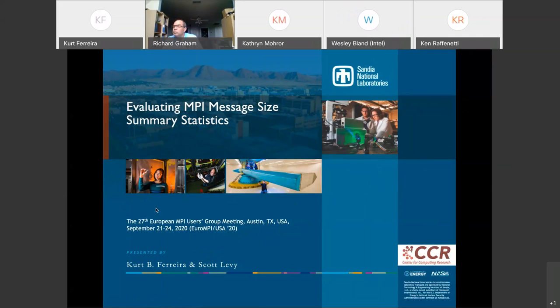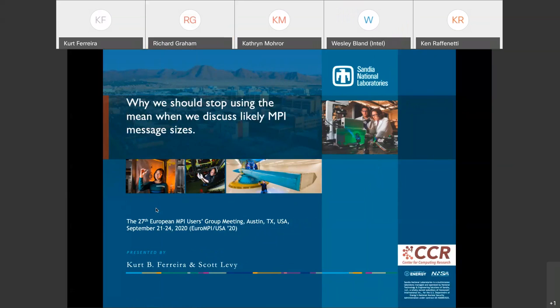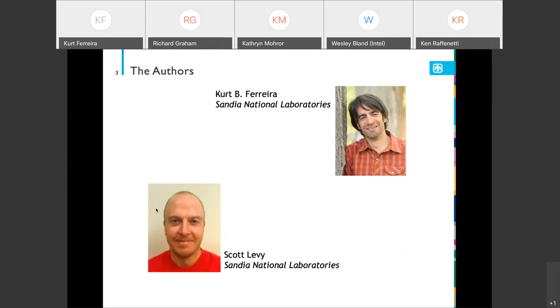As Rich said, this paper is entitled Valuing MPI Message Size Summary Statistics. A more pointed title for this paper might be Why We Should Stop Using the Arithmetic Mean when we discuss likely MPI message sizes. This is work done with a colleague at Sandia, Scott Levy. We're all virtual so there's our pictures. Scott's looks a bit like a mugshot, but he's smiling.